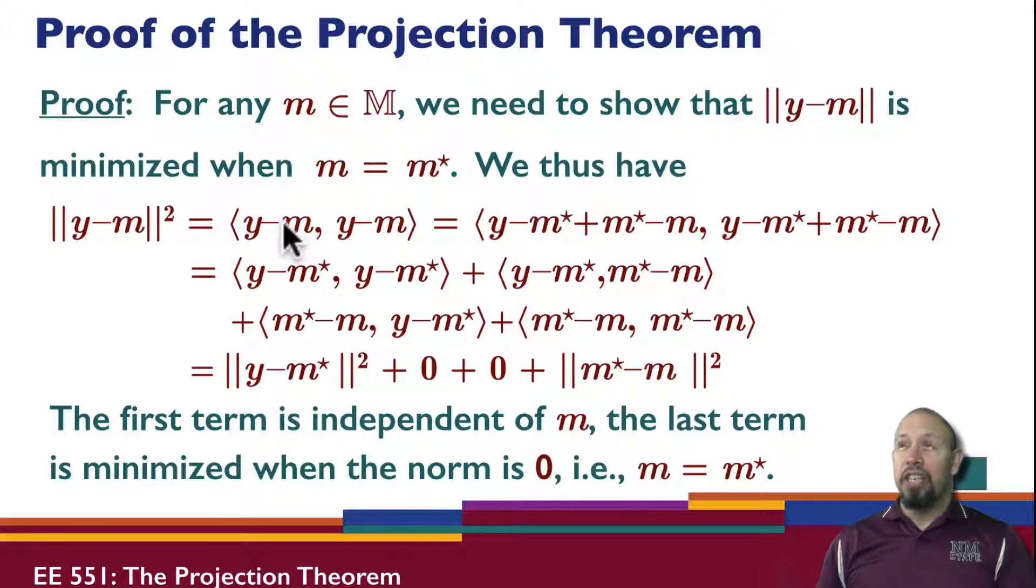Not too big of an assumption. So I take this quantity now, and I add and subtract, or rather, I subtract and add m star. So I subtract m star, add m star to both sides of the inner product.